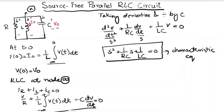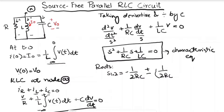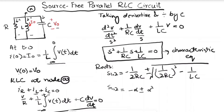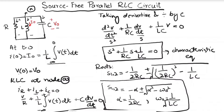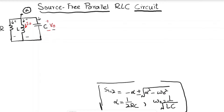Since this is a quadratic equation, the roots are s₁,₂ = −(1/2RC) ± √[(1/2RC)² − (1/LC)], which can be written as s₁,₂ = −α ± √(α² − ω₀²), where α = 1/(2RC) is the damping coefficient and ω₀ = 1/√(LC) is the resonant frequency.